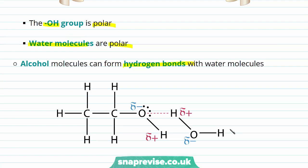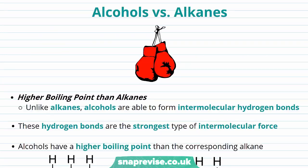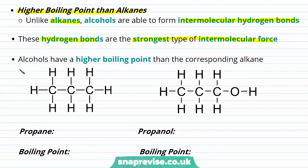Now let's compare alcohols to the appropriate comparative alkanes. We discussed the trends in the boiling point of our alcohols. Interestingly, alcohols have a higher boiling point than the comparative alkane. This is because unlike alkanes, our alcohols are able to form intermolecular hydrogen bonds — that's hydrogen bonds between the molecules of alcohols. We know these hydrogen bonds to be the strongest type of intermolecular force of attraction, so the forming of these strong hydrogen bonds allows our alcohols to have a higher boiling point than the corresponding alkane.